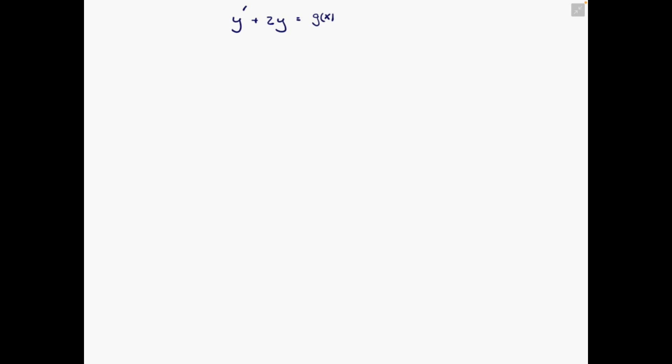In this video, we're going to take a look at the special case of a discontinuity. We're going to start off with a first order equation of this form: y prime plus 2y is equal to g of x. But g of x is different on different intervals. For the interval where x is greater than 0 but less than 1, g of x equals 1. For all x greater than 1, g of x equals 0. So we have two cases to deal with.